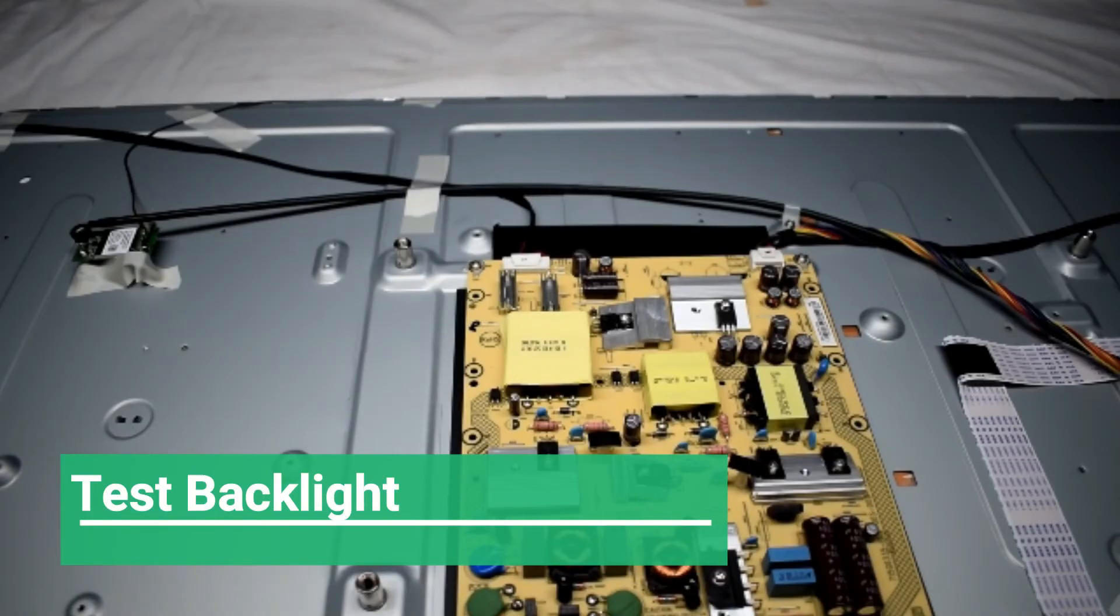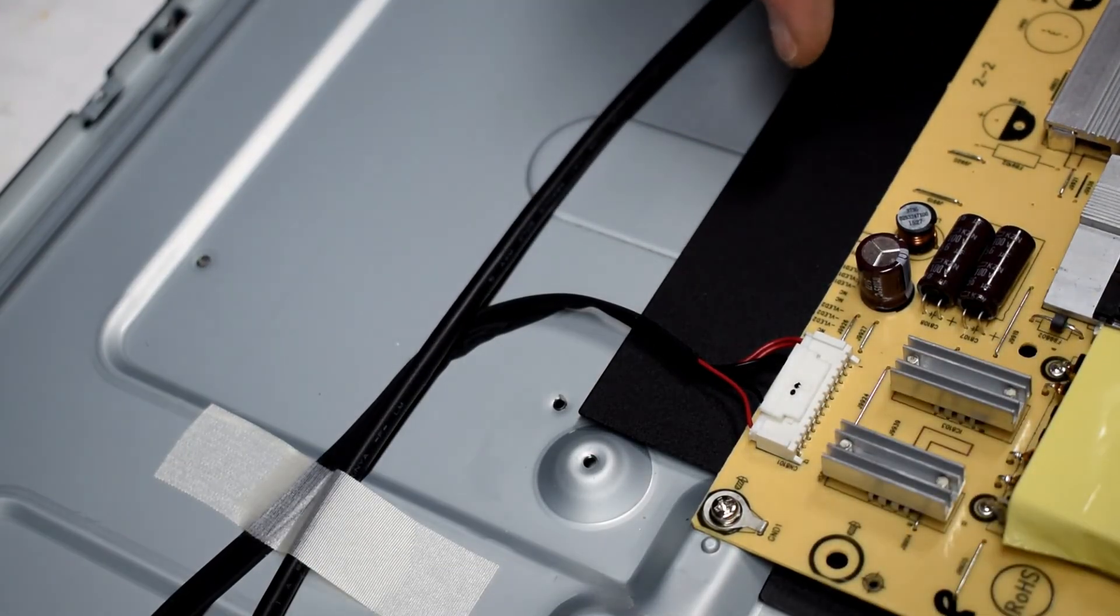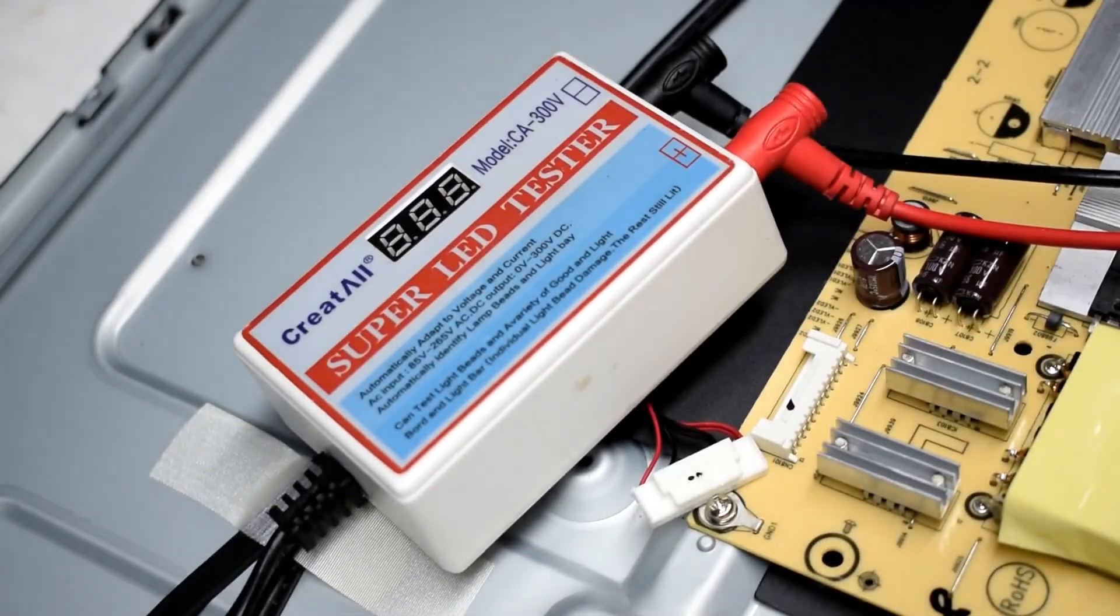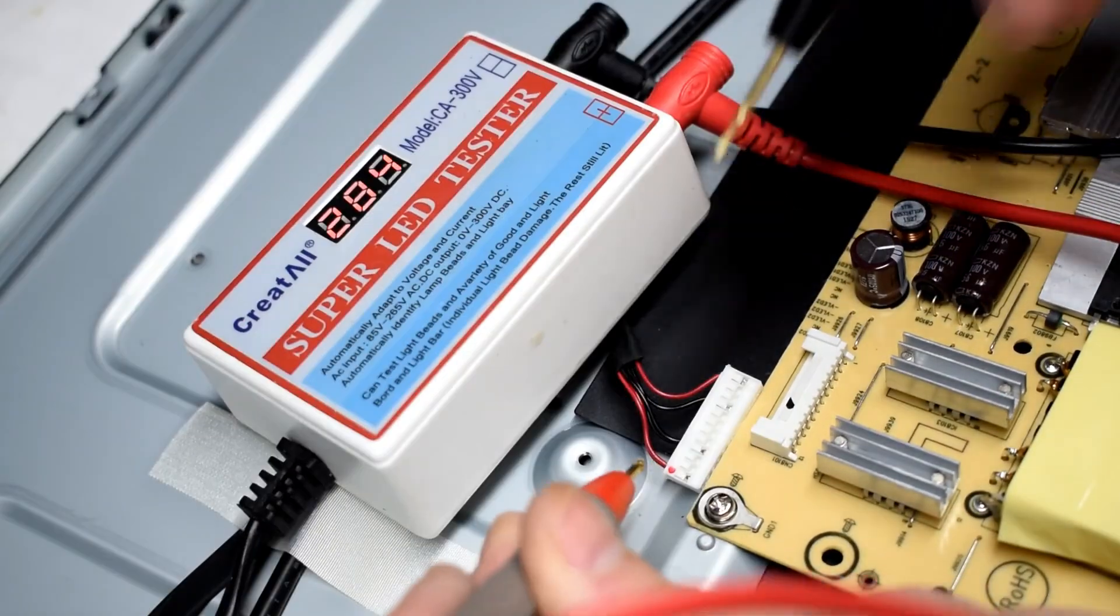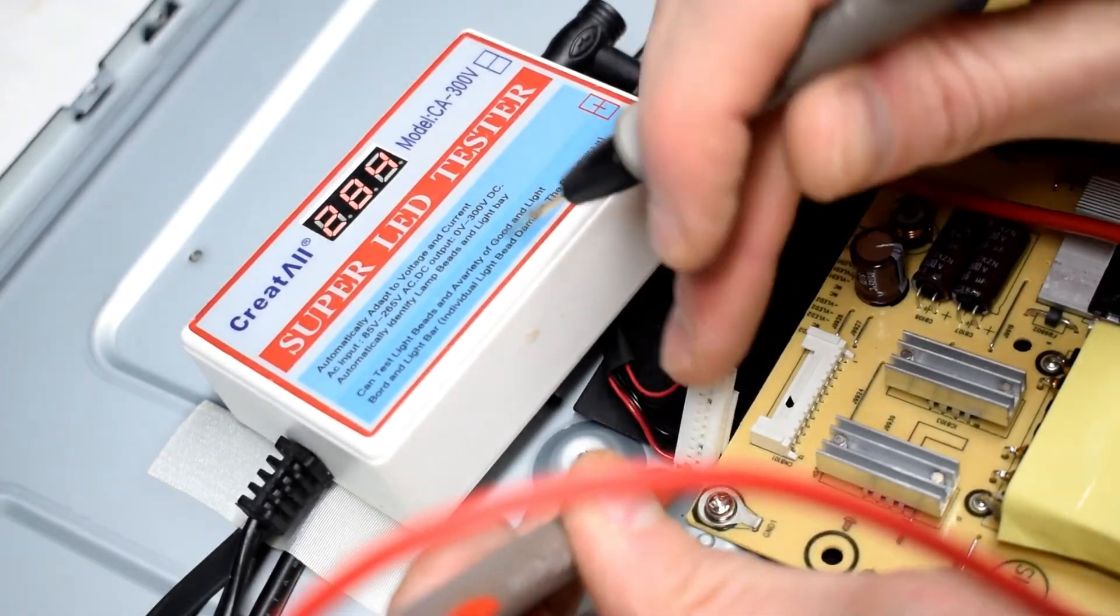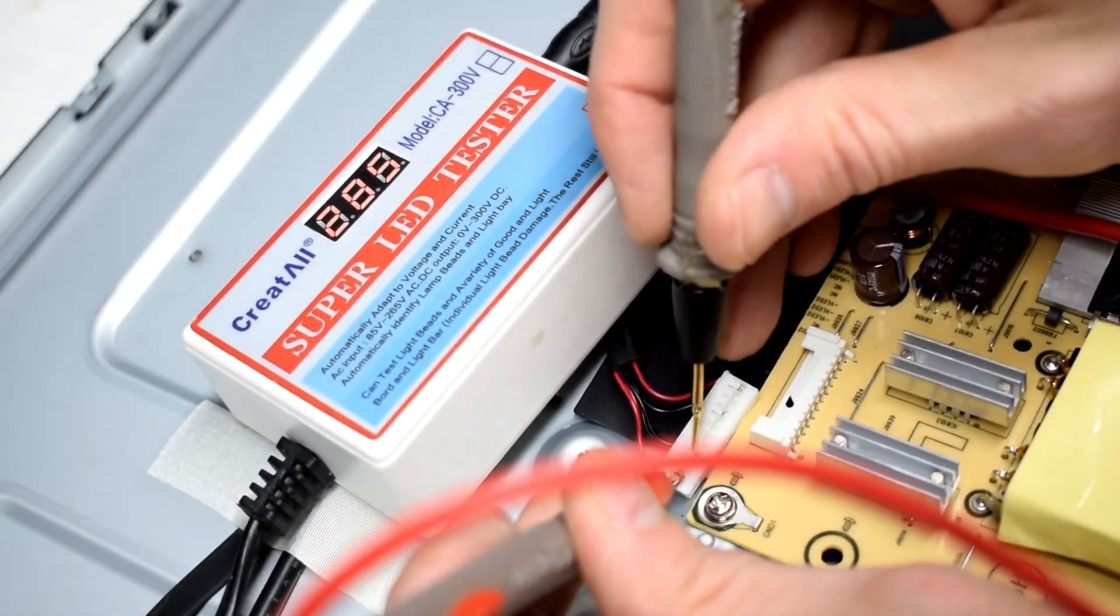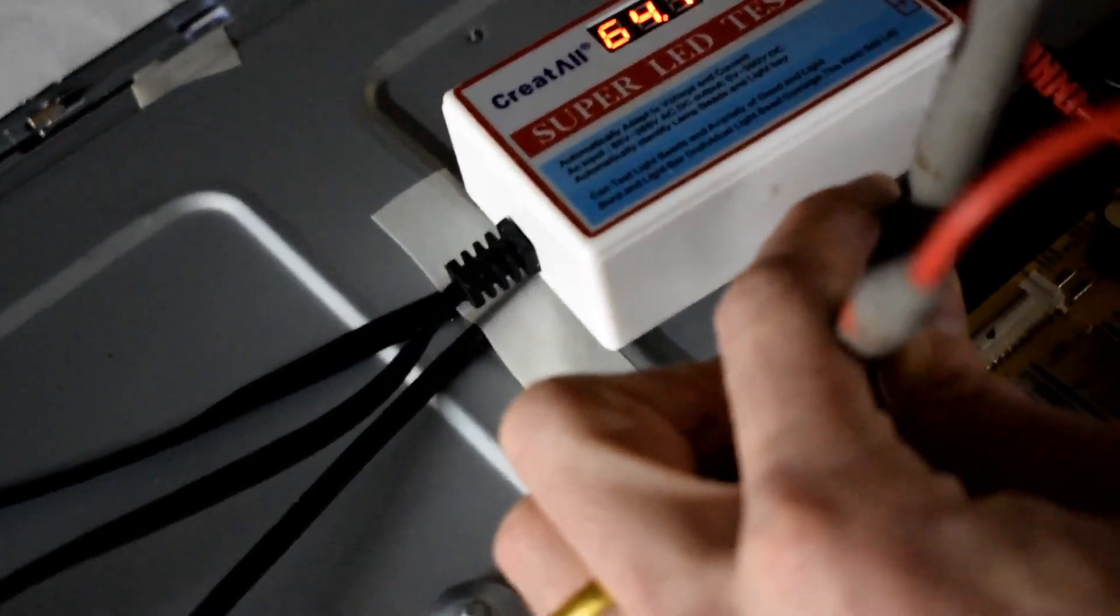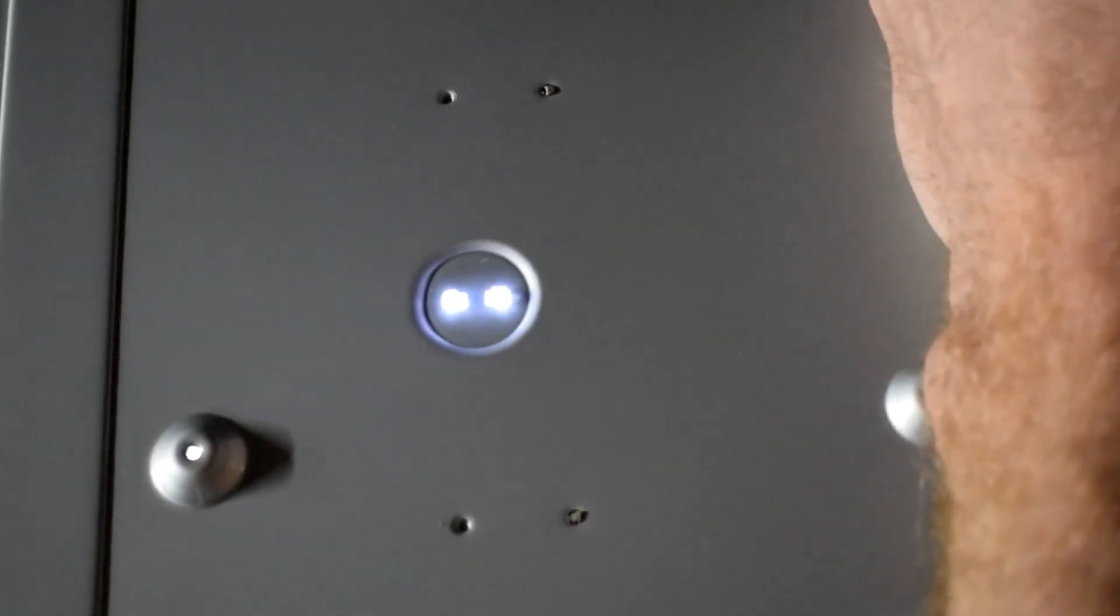We want to test the backlight, so we will get the power board and disconnect the LED cables. Using my LED tester, we can verify that this is the problem. Put your positive to positive and negative to negative. We get 64 volts and there is light, so that strip is okay.